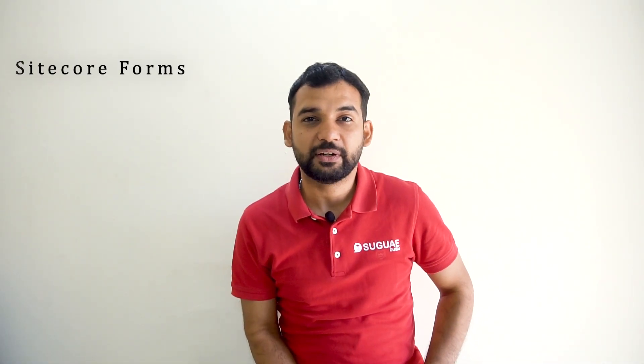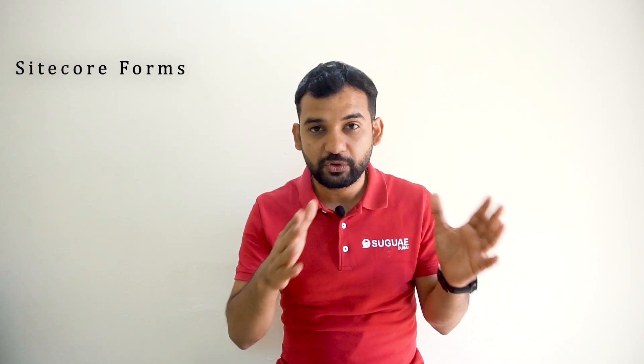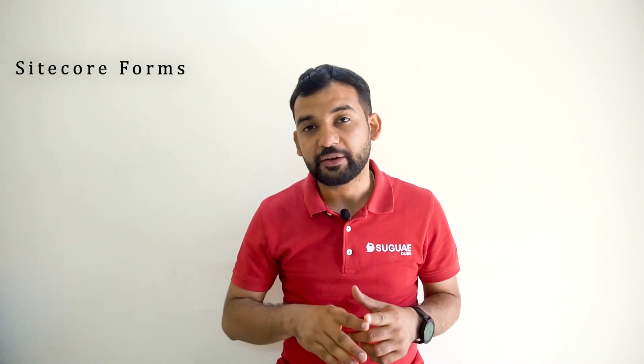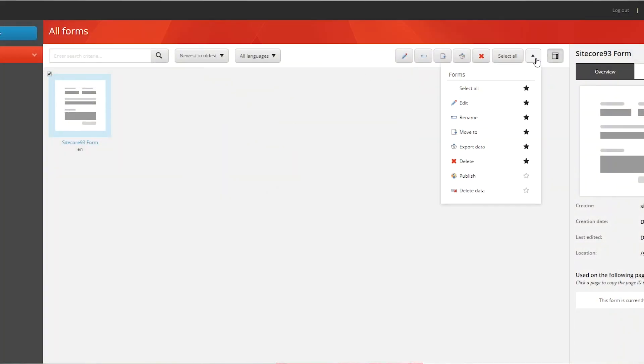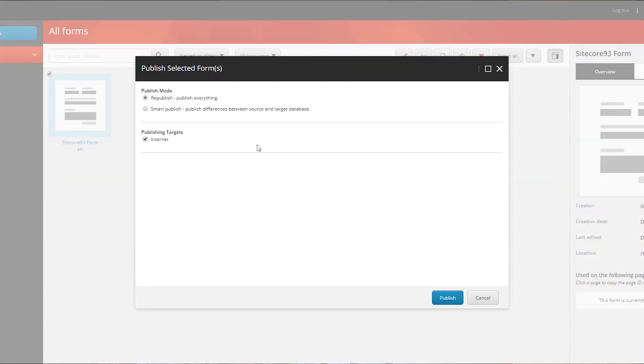Let's start with Sitecore Forms. Before Sitecore 9.3, once you create any form, it's approved and ready to push live, you have to go to the content editor, find that form in the content tree and publish it manually. In Sitecore 9.3, that step is gone. Once you create a form, it's approved and ready to push live, you can publish the form directly from the form's UI.